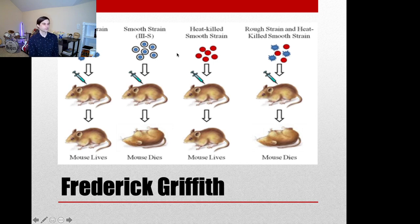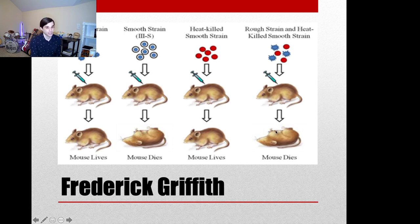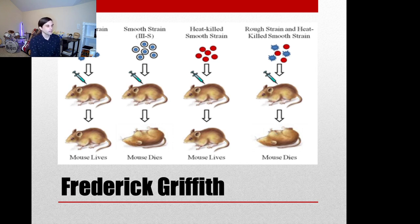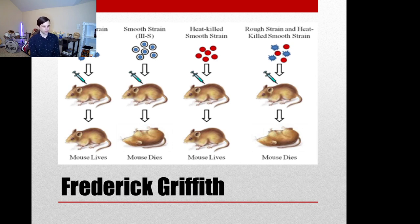Then Griffith took it a step further. He mixed the heat-killed smooth strain and the live rough strain together and injected them into a mouse. That mouse died. When he did an autopsy, he found the smooth strain of bacteria living inside the mouse. He had no idea what he was looking at, but what he was observing he called the transformation principle — one of the very first documented observations of bacterial transformation.